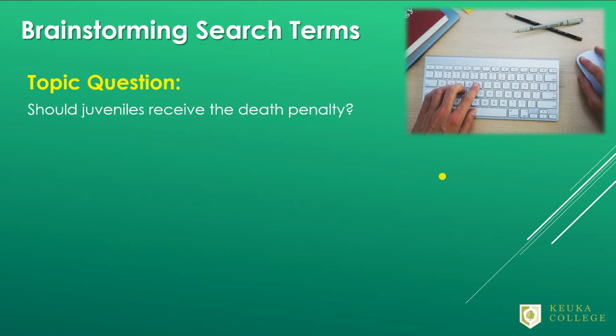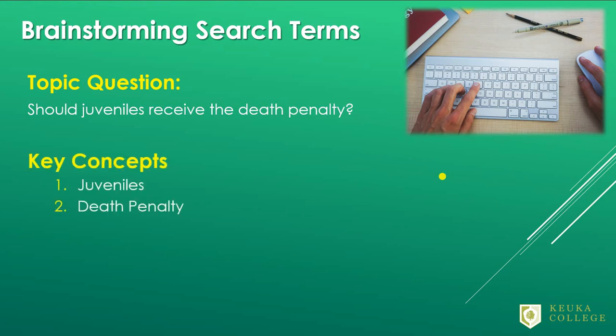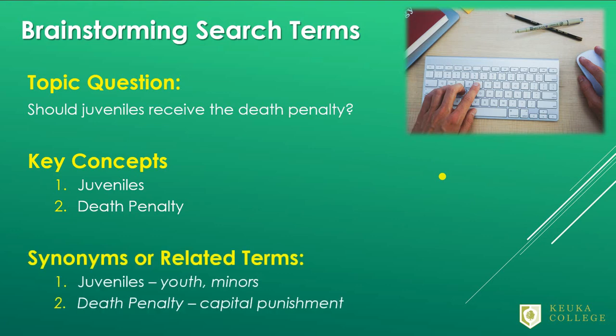Let's practice the method we've just learned. My topic question is: should juveniles receive the death penalty? What would be the key words or concepts in that question? If you said 'juveniles' and 'death penalty,' then you're correct. Now we need to think of other words — synonyms or related terms — to describe those concepts. How else would you talk about juveniles? How else would you talk about the death penalty? For juveniles, we could use 'youth' or 'minors.' For death penalty, we could use 'capital punishment.' Did you think of other words besides just those? You could try those as search terms, too.